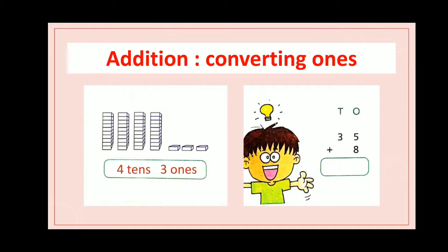Adil writes the addition sum like this: 35 plus 8. Let's add ones first. 5 plus 8 is equal to 13. 13 is equal to 1 ten and 3 ones, so we write 3 in the ones column and carry 1 forward to the tens. Now 1 plus 3 is equal to 4. We have 4 tens and 3 ones, that is 43. So 35 plus 8 is equal to 43.